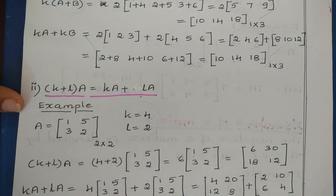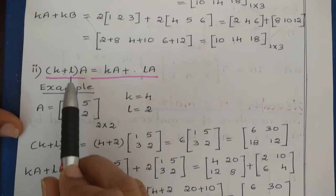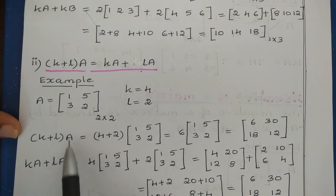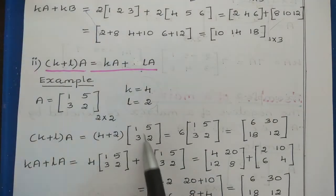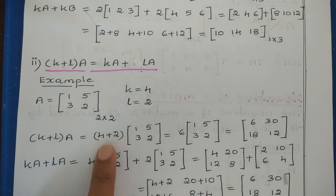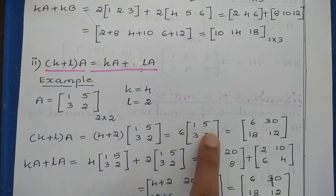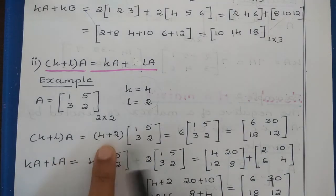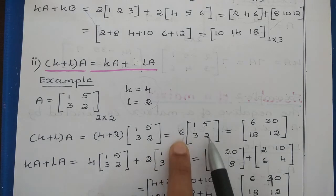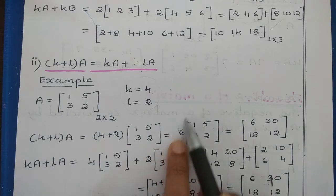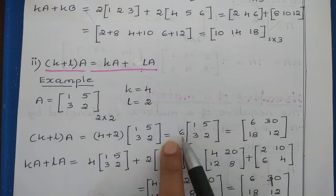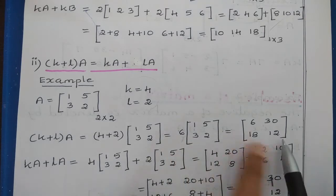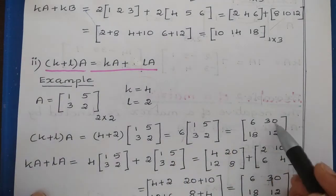For the left hand side, (K plus L) into A equals (4 plus 2) into A, which is 6 into the matrix 1, 5, 3, 2. Since 4 plus 2 equals 6, and 6 is a scalar, multiply 6 with every element of the matrix: 6 into 1 is 6, 6 into 5 is 30, 6 into 3 is 18, 6 into 2 is 12. So the LHS result is the matrix 6, 30, 18, 12.